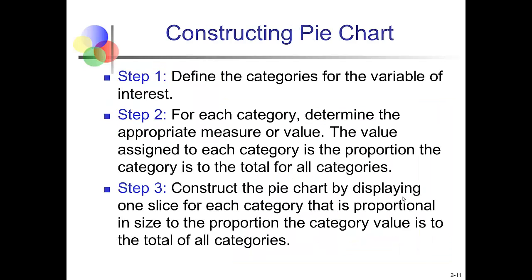How do we construct a pie chart? It's a lot like a bar chart. We start by defining the categories of interest. For each category, we determine the appropriate measure or value just like we did before. The computer will automatically turn those categories into proportions. So you don't actually have to worry about doing that calculation yourself. As long as you have those values listed in a column, when you highlight them and create the pie chart, the pie chart will automatically display those proportions. So the last step is to construct that pie chart, where each slice is proportional to that category's relative importance. And then of course, like any other chart, we would interpret our results.